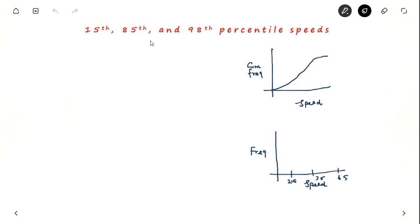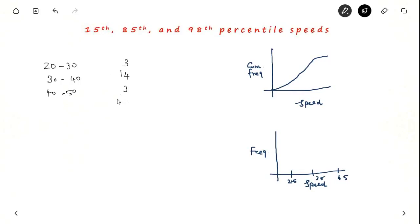Now I will explain the 15th, 85th, and 98th percentile speeds with an example. Suppose you have measured the spot speed of 20 different vehicles. In the range 20–30 km per hour, 3 vehicles passed; 30–40 km per hour, 14 vehicles; 40–50 km per hour, another 3 vehicles. The median speeds are 25, 35, and 45 km per hour respectively.